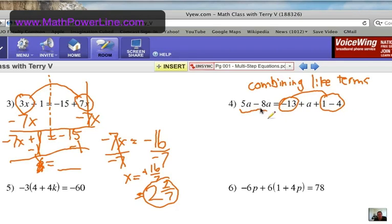So, on the left, 5A take away 8A is negative 3A. Watch your signs there. And here we have A. That's a 1A or just a plain A right there. Plus, let's see, negative 13 and 1. That's a positive 1. That makes it negative 12. Take away 14 more is negative 16. Be very careful about your signs there.